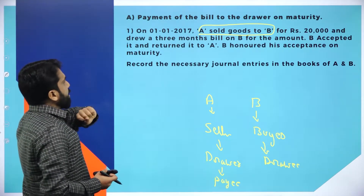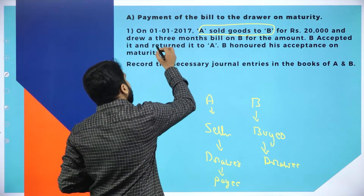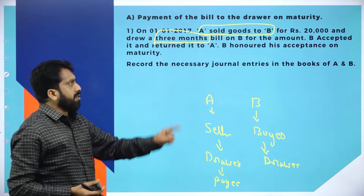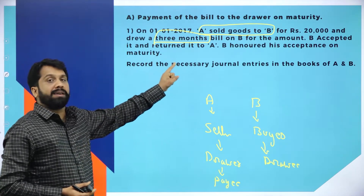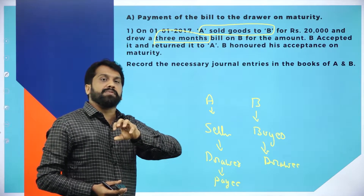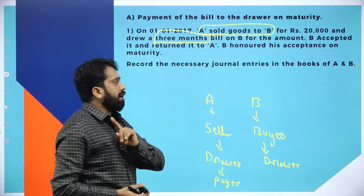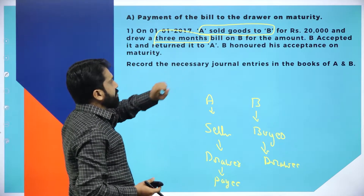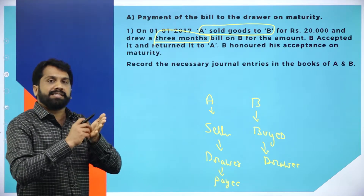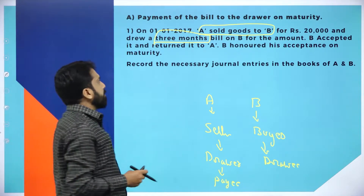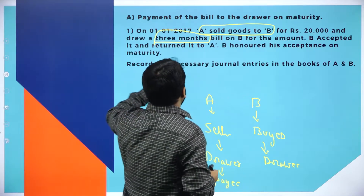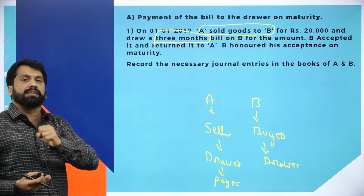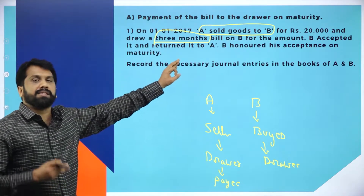The amount here is 20,000 and they drew a 3-month bill. B accepted it and returned it to A — meaning B signed the document and returned it to A. B honored his acceptance on maturity. Once the end of the third month came, whatever he had promised — that I will give you that amount after 3 months — he has given it.